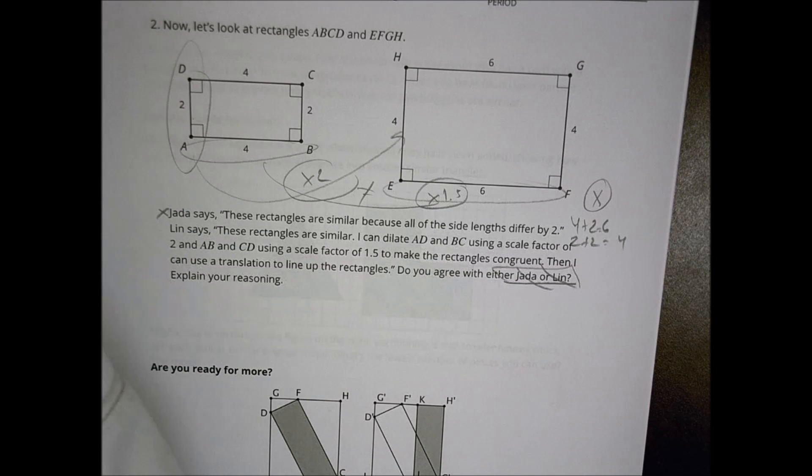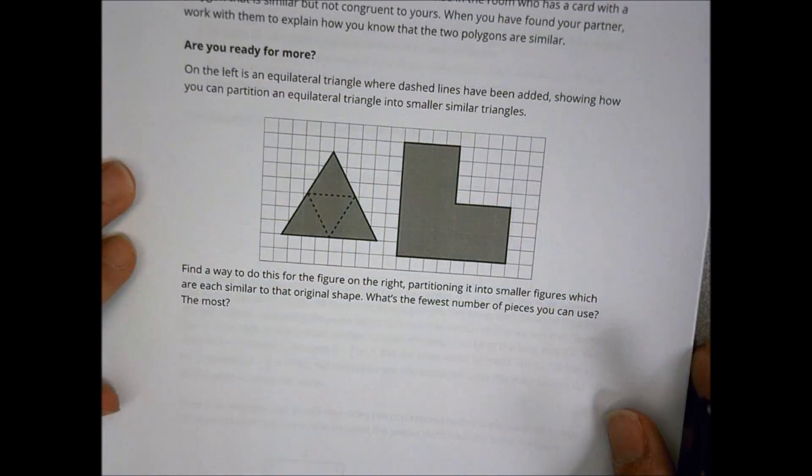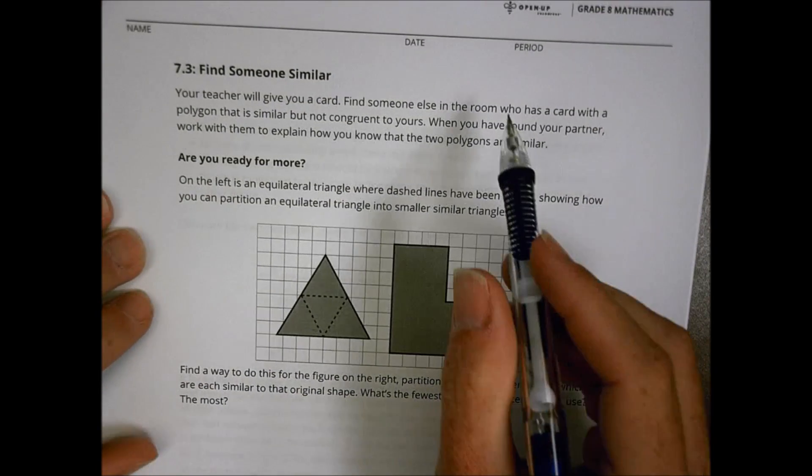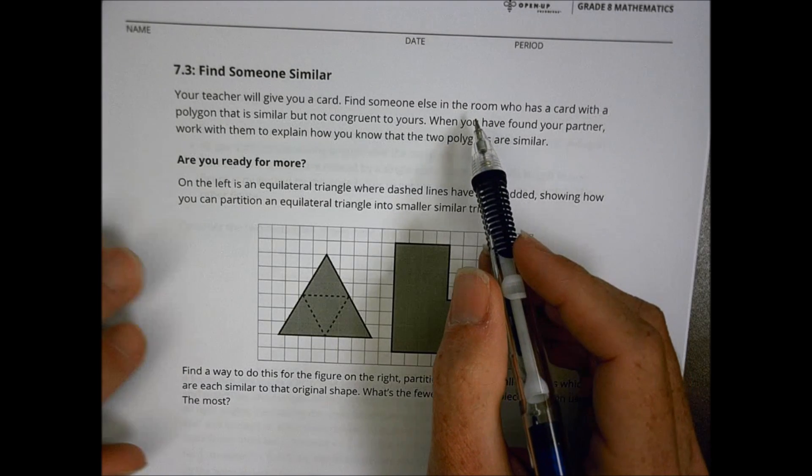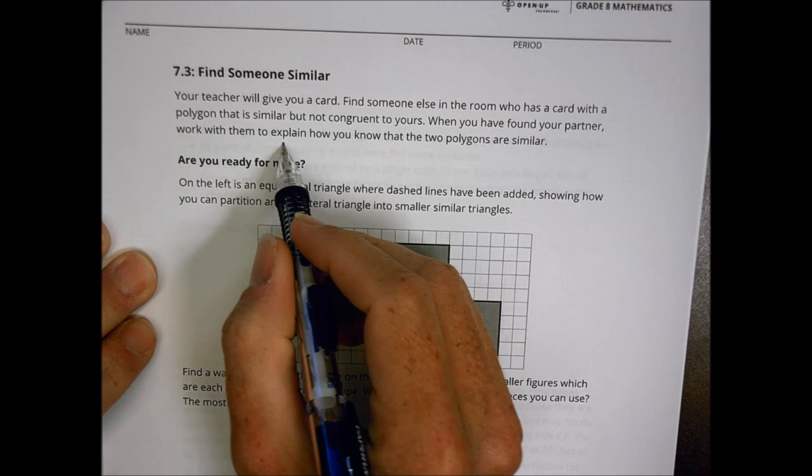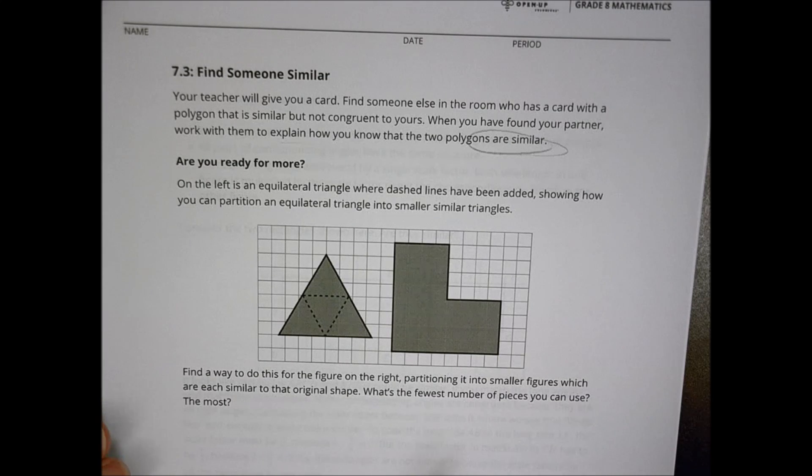Taking a look at then the next one, 7.3, it says to find someone similar. And so as you look at the find someone similar idea, you had a card and you're supposed to find someone else from there as a card with a polygon that's similar but not congruent to yours. And you find your partner and talk about how you know that they are similar there. So take some time doing that. Good luck finding someone who looks like you in terms of your polygon.